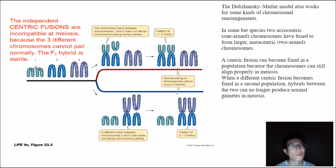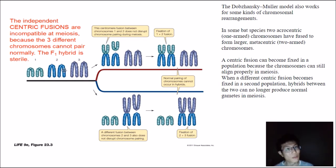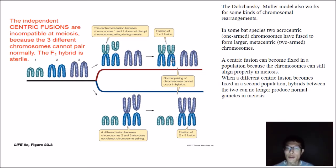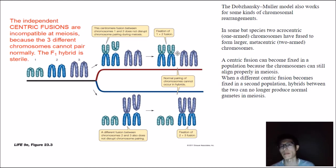In the second population, a different kind of fusion occurs — instead of chromosomes one and two fusing, chromosomes two and three fuse. This different fusion also becomes fixed in that population. So now population one and population two are very different, with each having its own centric fusion fixed.